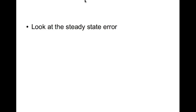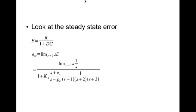Now let's look at the steady state error. The steady state error is given by E equal to R divided by (1+DG). The steady state error is limit as s tends to 0 of s times E. Substitute all the terms here; I put R equal to 1/s because we are looking at step response, R is step.